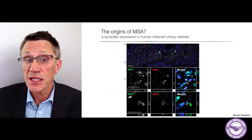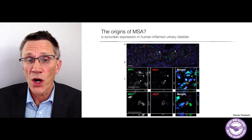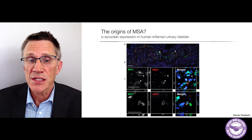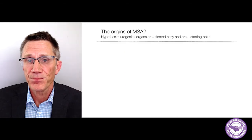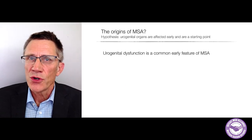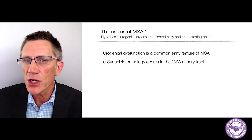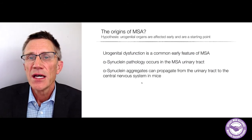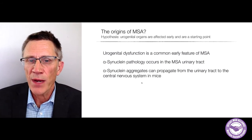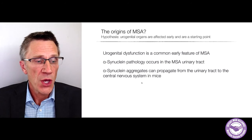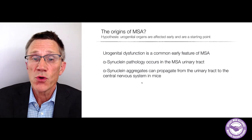We're also seeing this phenomenon in human bladders that have been inflamed for one reason or another — synuclein is right inside these white blood cells. So urogenital dysfunction is a common early feature in MSA, synuclein pathology occurs in the urinary tract, and we know from the Chinese study that injecting synuclein aggregates in the mouse bladder can propagate up into the central nervous system.